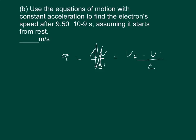So we want to solve for final velocity. We get the acceleration times time plus the initial velocity is equal to the final velocity. The question tells us the initial velocity is zero, so we know the final velocity is equal to the acceleration times time.